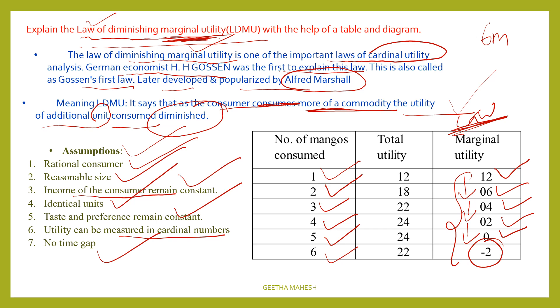If a time gap is given, utility may increase or decrease. So we assume that there is no time gap between successive consumption.